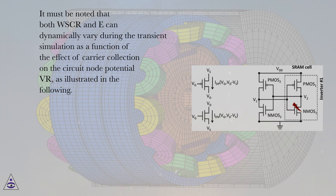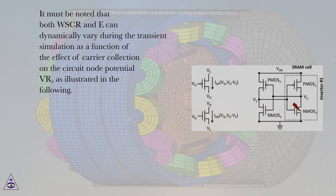It must be noted that both WSCR and E can dynamically vary during the transient simulation as a function of the effective carrier collection on the circuit node potential VR, as illustrated in the following.